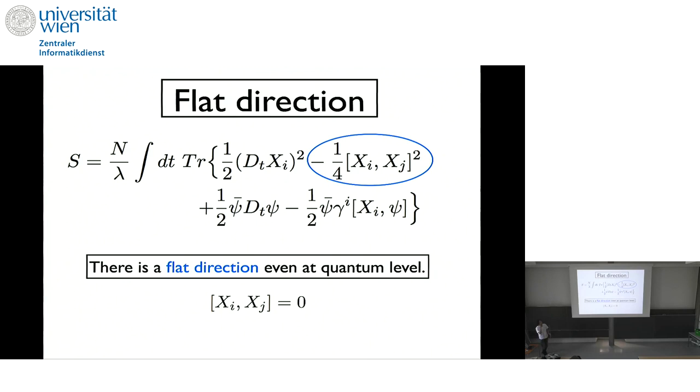And there are several technical issues to be overcome in order to do this kind of simulation. And the biggest problem is the flat direction. So this is a Lagrangian action of the D0 brane matrix model. And so we have a momentum square part. And the potential term is commutator squared.